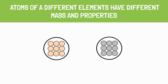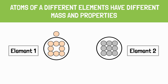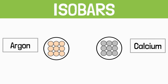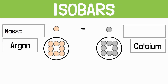Another part of this postulate says atoms of different elements have different mass and properties — an atom of sodium will be different from an atom of fluorine, and an atom of hydrogen will be different from an atom of cobalt. However, according to this postulate, argon and calcium should be dissimilar, but their atoms have the same atomic mass of 40 amu.